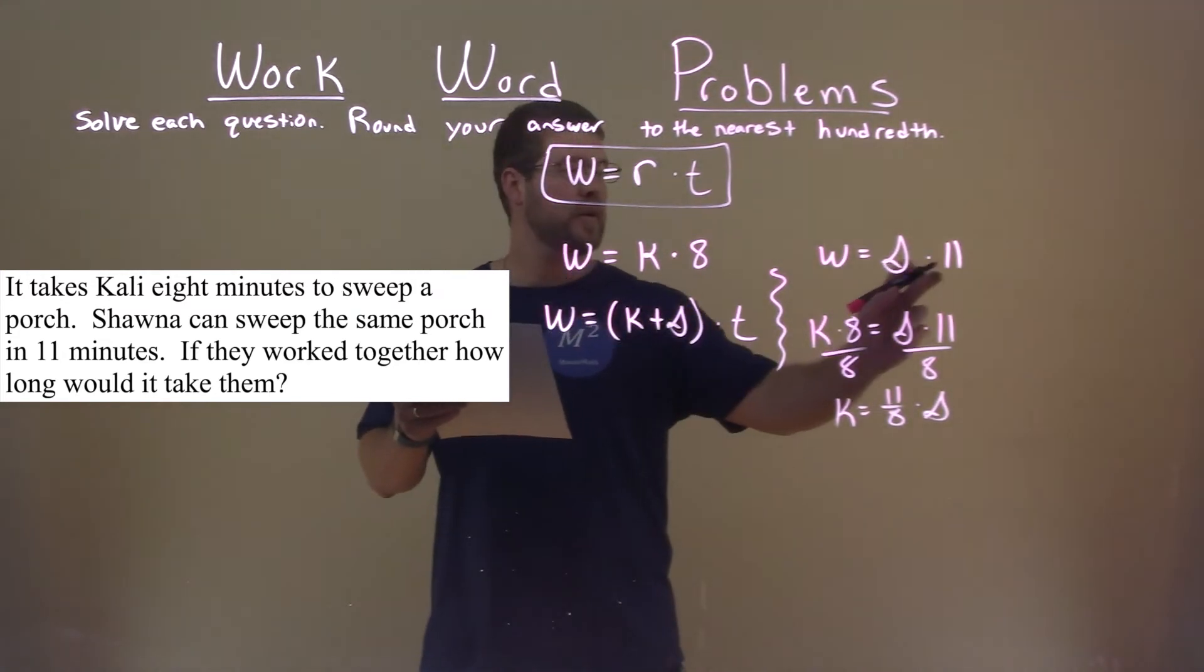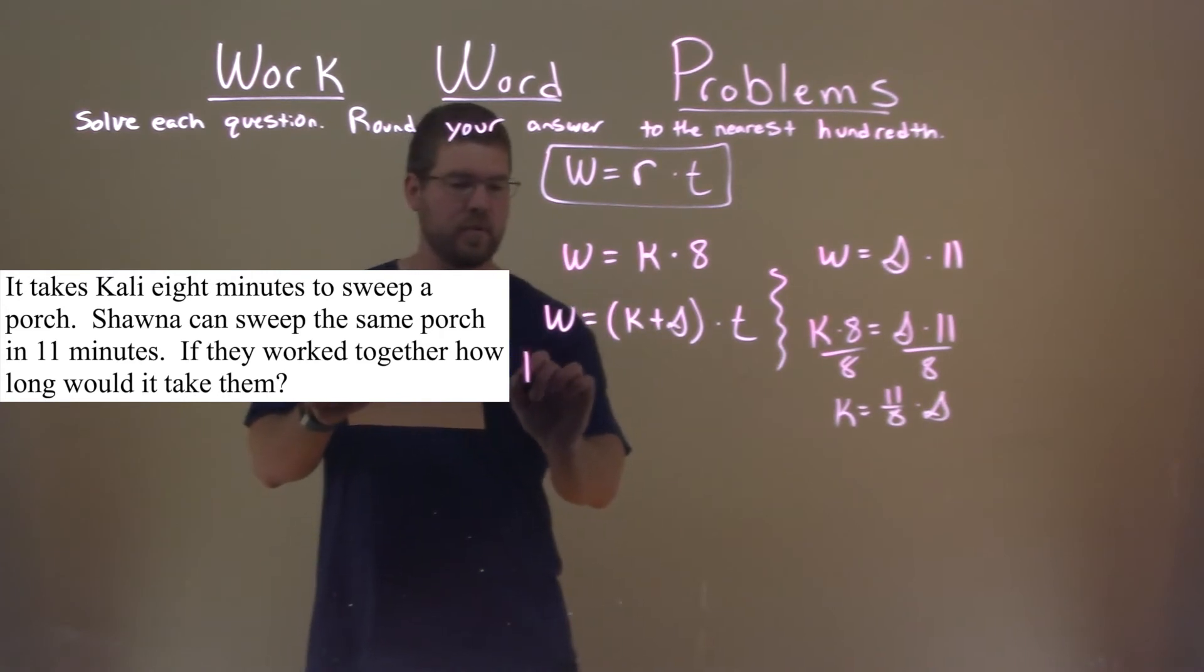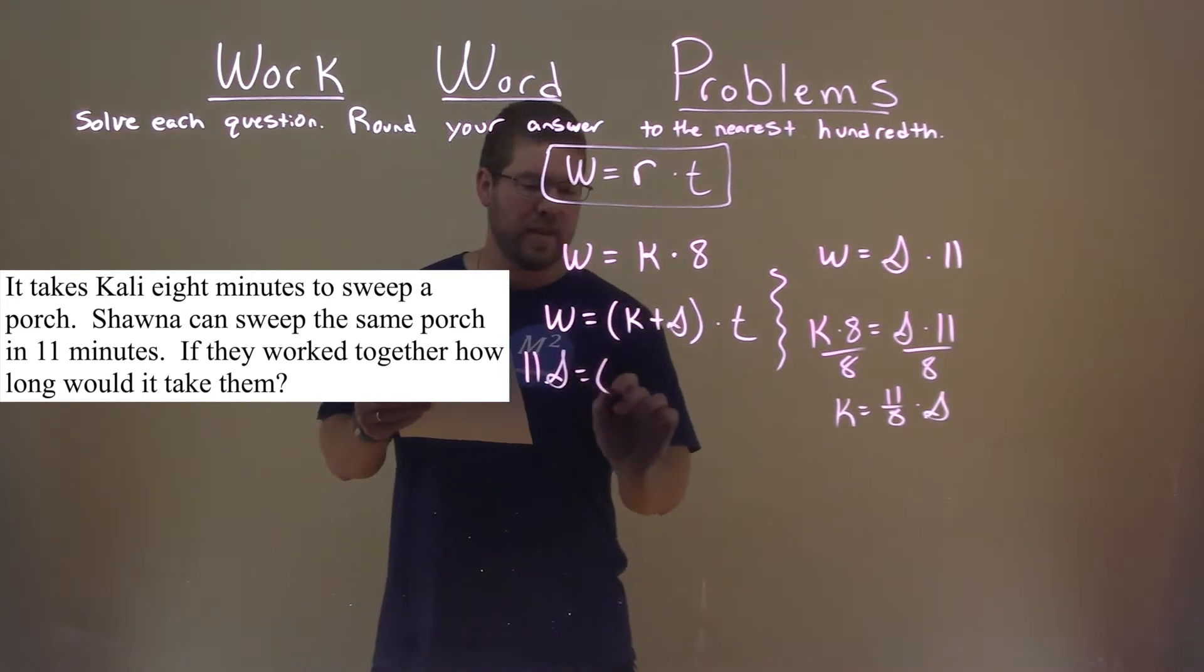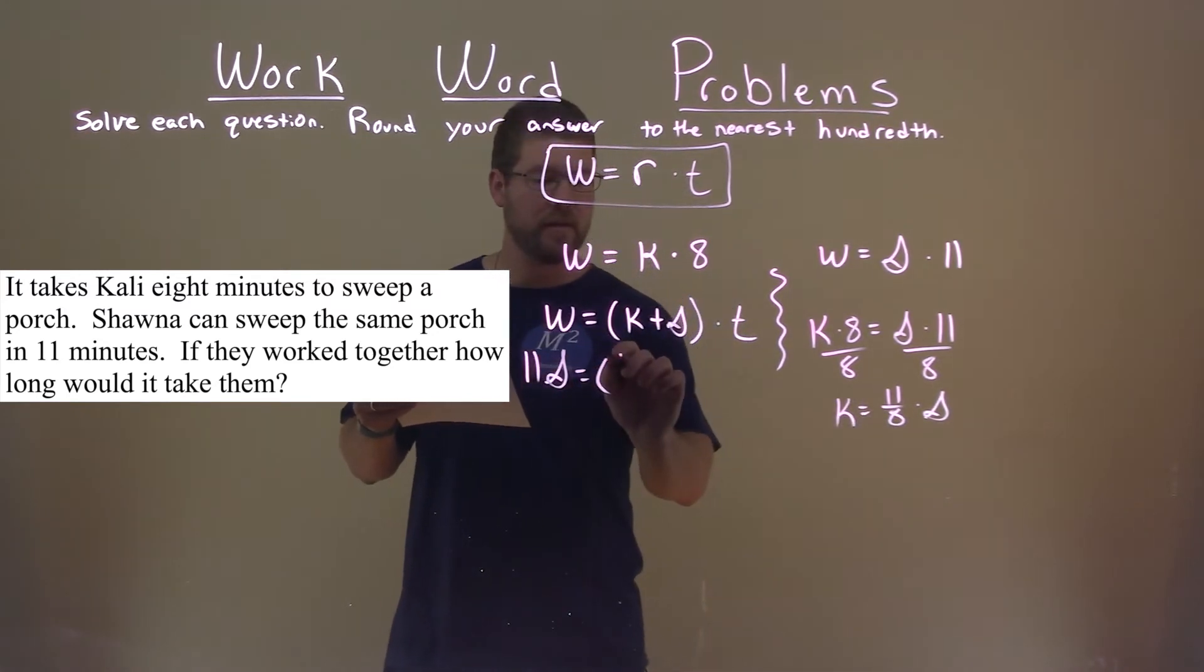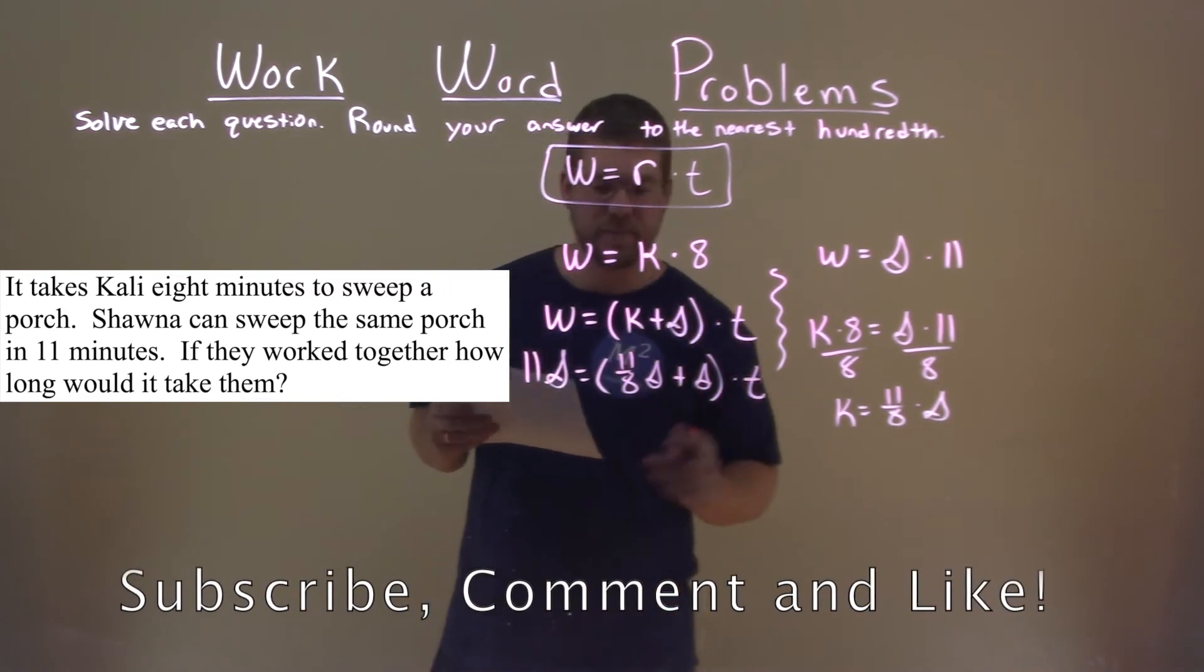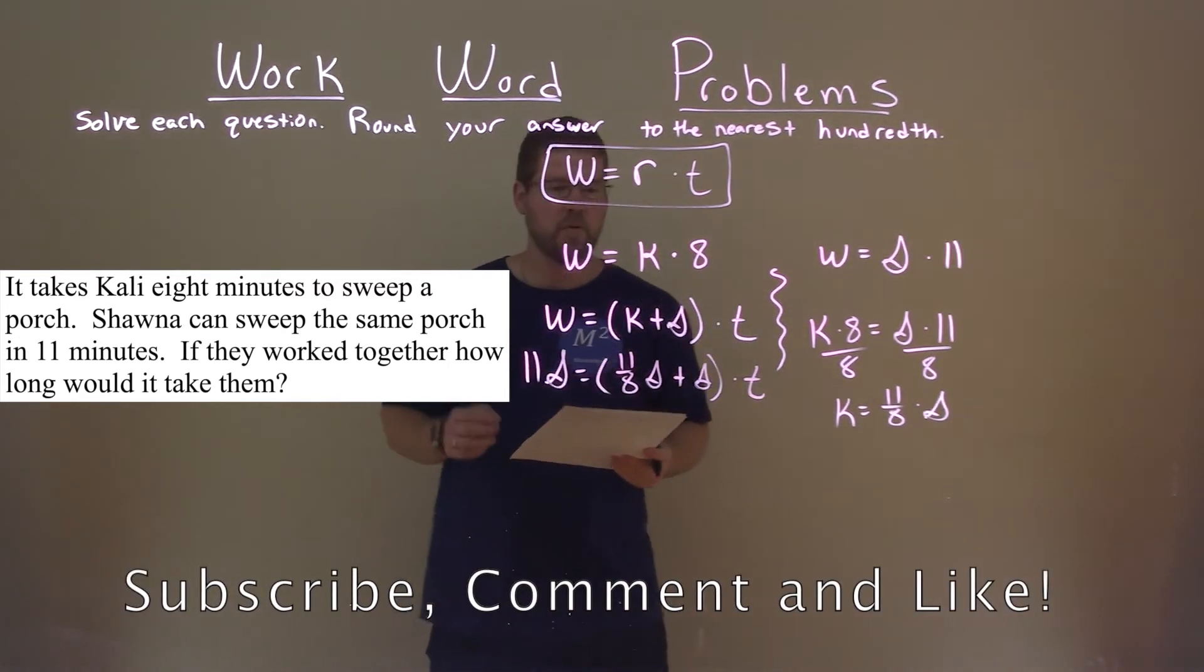So W is equal to 11S, or S times 11, however you want to write it. I think it's easier this way. And then instead of K, we're putting 11/8 S plus S times T. And now we're going to solve for T.